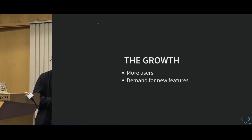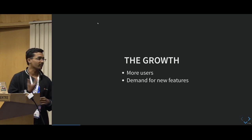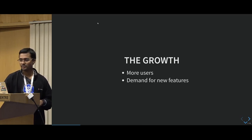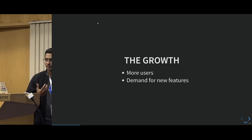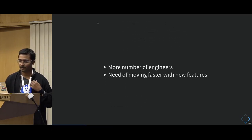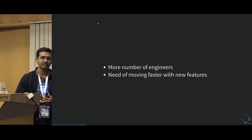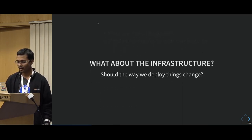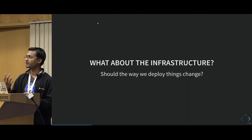Then comes the growth. You start getting more users, a lot of hits, and the traffic is huge and increasing day by day. As users increase, the demand for new features increases. Then what you do is you have more engineers and the need is to start moving very fast. People are asking for new features, you have to prioritize them and start working on them. But while these things are changing, what about the infrastructure and the way you deploy things?